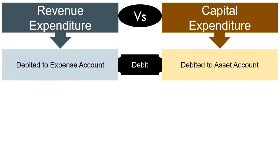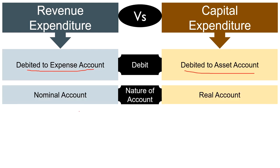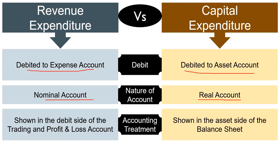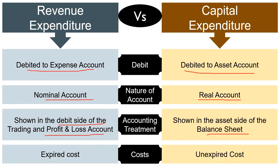Revenue expenditure is debited to an expense account, while capital expenditure is debited to an asset account. Because revenue expenditure is debited to an expense account, it is a nominal account, whereas capital expenditure is debited to an asset account and so it is a real account. Revenue expenditure is shown on the debit side of the trading and profit and loss account, but capital expenditure is shown on the asset side of the balance sheet. Revenue expenditure is an expired cost because it is recognized as an expense, while capital expenditure is an unexpired cost because the amount is not fully charged as an expense.